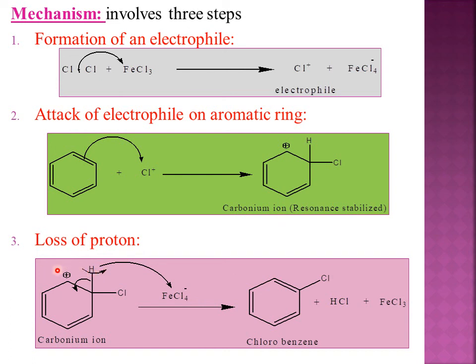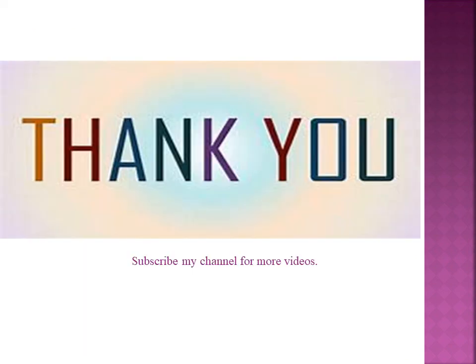In step three — loss of proton — FeCl4- abstracts the proton to stabilize the positive charge. The bond between carbon and hydrogen shifts to carbon-carbon, forming chlorobenzene. The H+ combines with Cl- from FeCl4- to regenerate FeCl3. These are the three important steps in the mechanism of chlorination. Thank you for your attention.